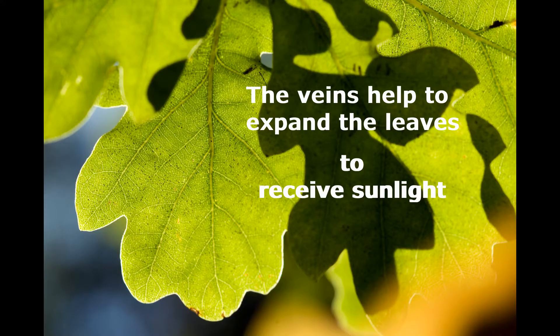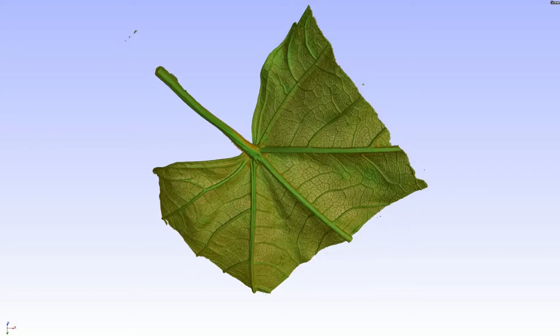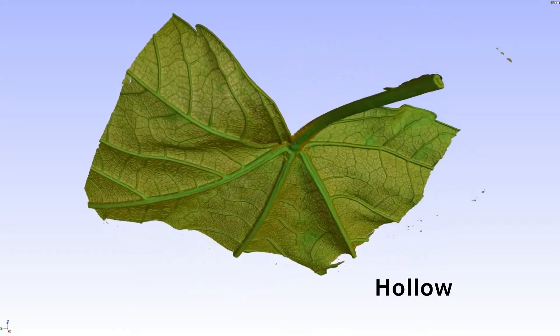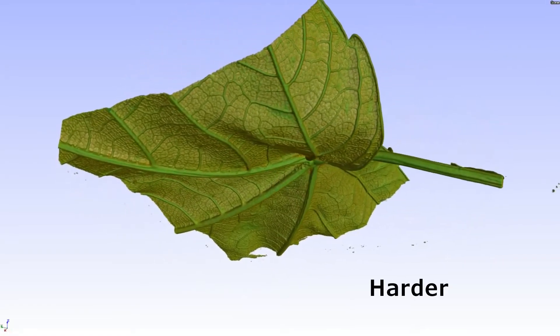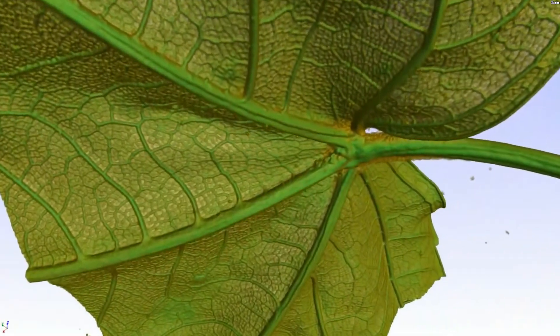Not only do the veins help to provide support and expand the leaf, but they also do something else. The veins are hollow and they are a little bit harder than the rest of the plant parts. They look like tubes.